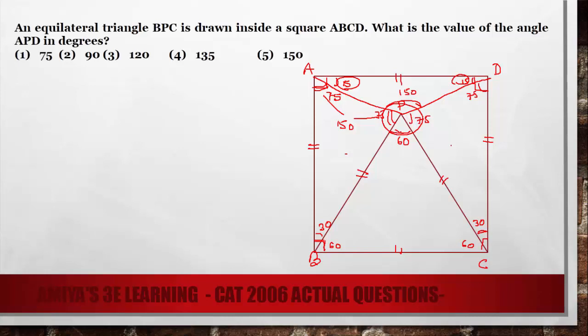At point P, all angles would be 360 degrees. So this angle is nothing but 150 degrees. So the answer of this question is nothing but 150, option number 5.